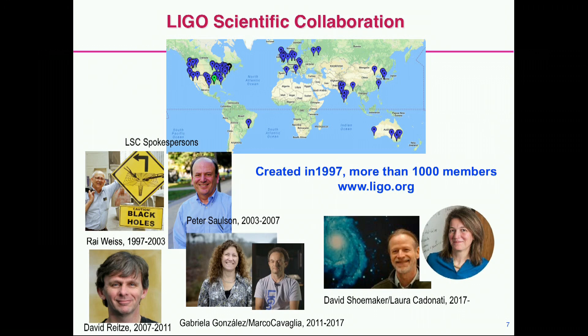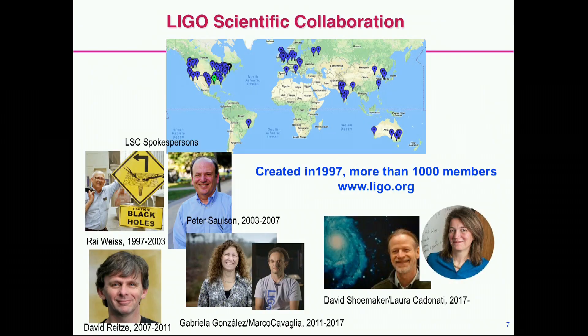But what I want you to understand is that this is not just a map — it's not just a few people. It's 1,200 people, and each of these spots is a group with between 20 to 100 people each. These are all young and senior men and women, people from different cultures. And that's what makes this work.